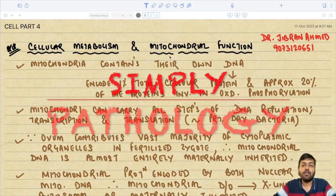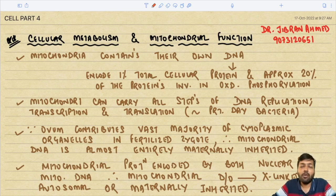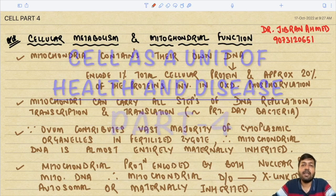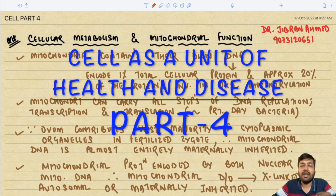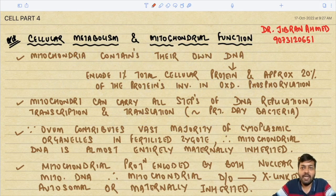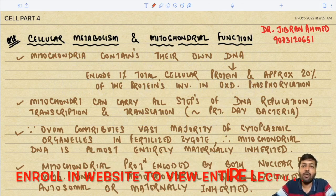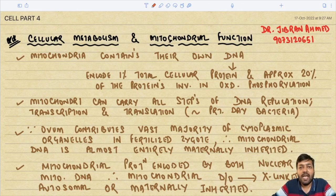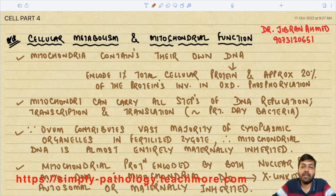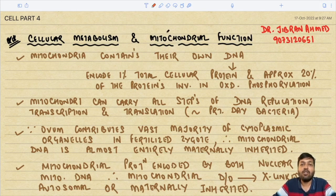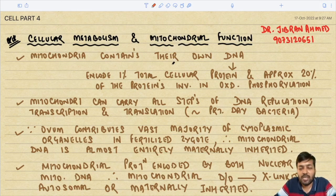Dr. Gibran Ahmad presents Simply Pathology. Today we are back with an important video - we will discuss cell as a unit of health and disease, part 4. In this lecture we are mainly going to focus on mitochondrial function, and after that we are going to read about cell signaling pathways along with the different kinds of receptors. Let us start with cellular metabolism and mitochondrial function.